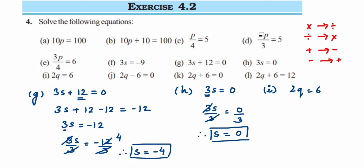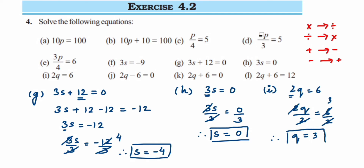Problem i: 2q = 6. Remove the 2 — it's in multiplication, so divide 2 on both sides. The 2s cancel: 6/2 = 3. Therefore q = 3 is the answer.